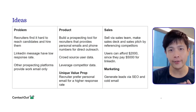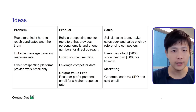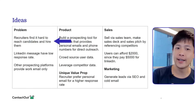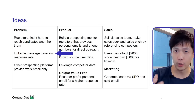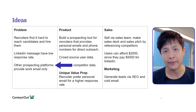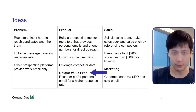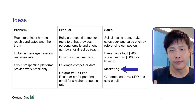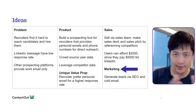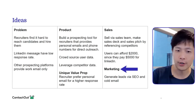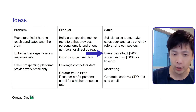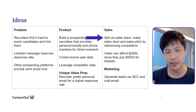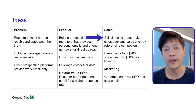From this research, I'd develop a bunch of ideas around the problem that we're solving: recruiters finding it hard to reach candidates and hire them, LinkedIn messages having a low response rate, and other prospecting platforms providing only work email. Our unique value proposition being that recruiters prefer personal emails and mobile numbers for a higher response rate, and marketing via cold email as well as SEO, like our competitor RocketReach. A price point of $2,000, as well as a sales process developed by combining the best practices of our competitors' sales pitches.